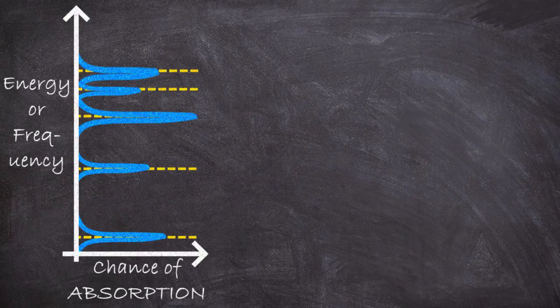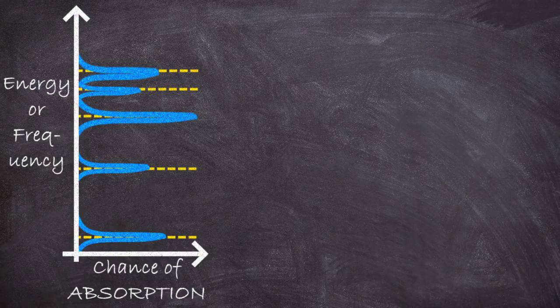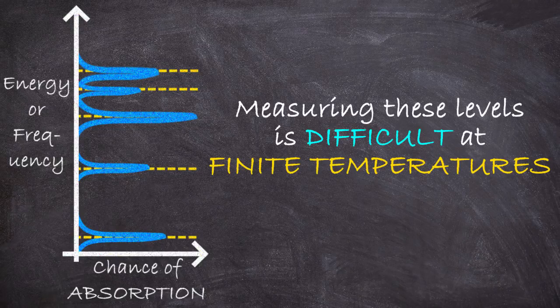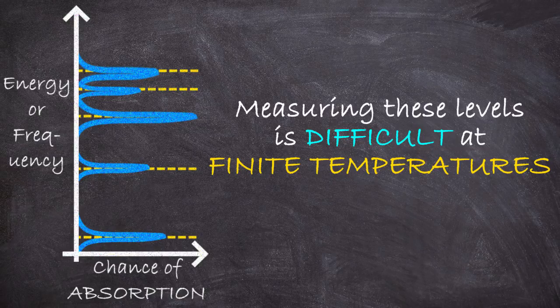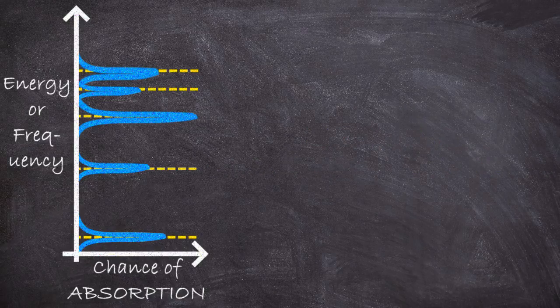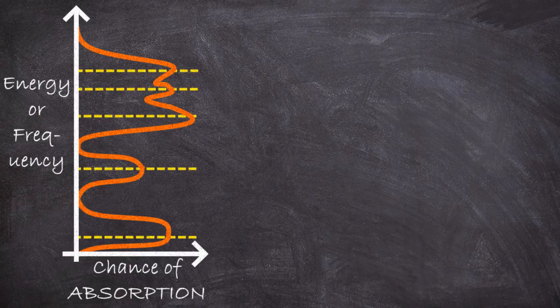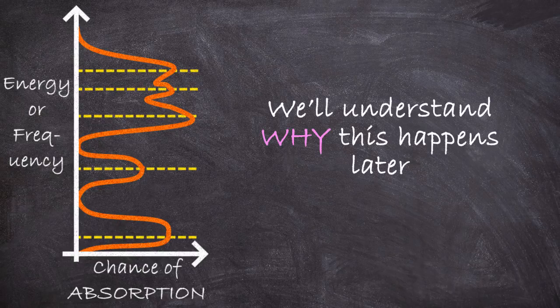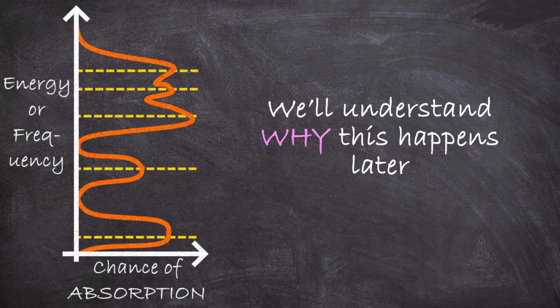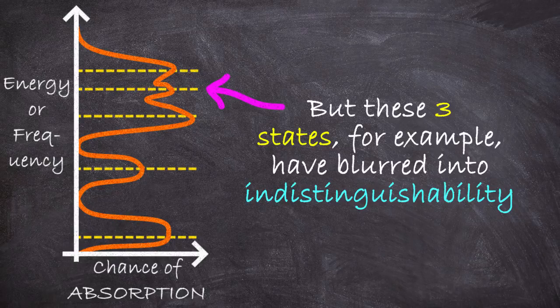But at finite temperatures, actually measuring these levels can be difficult. And that's because if you have a bunch of atoms at a finite temperature, these energy levels actually get blurred and imprecise. We'll actually come to understand a big reason for this later on. But the simple fact is this is a big issue if you want information about energy levels that are very close to each other in energy.